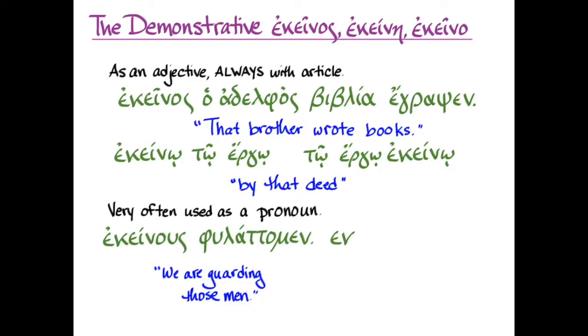Another example: ἐκείνας παύομεν. And here we've got the feminine accusative plural, and so we've got women. And this then means we are stopping, παύομεν, those women, ἐκείνας.